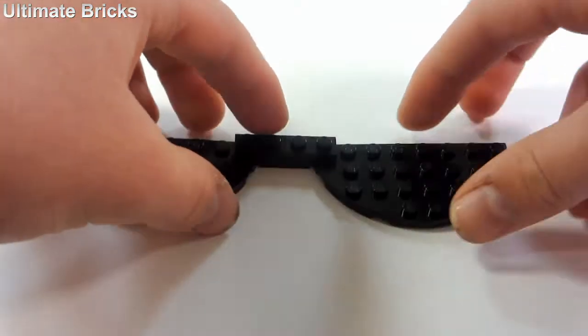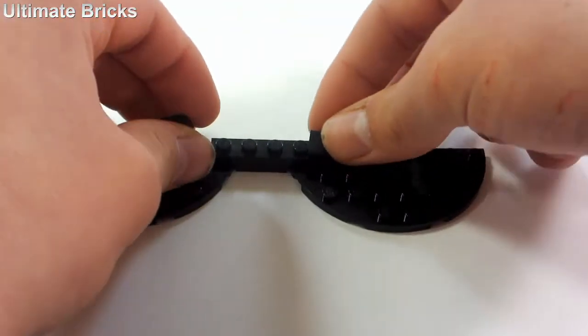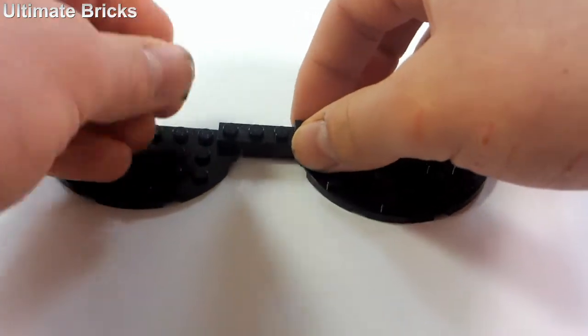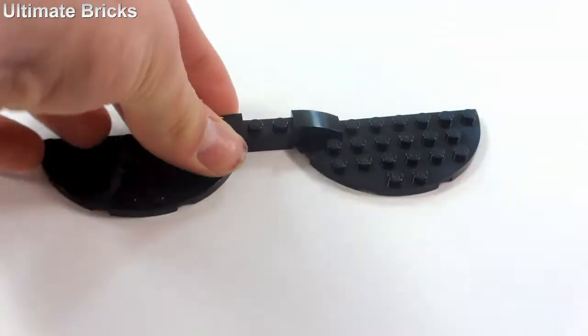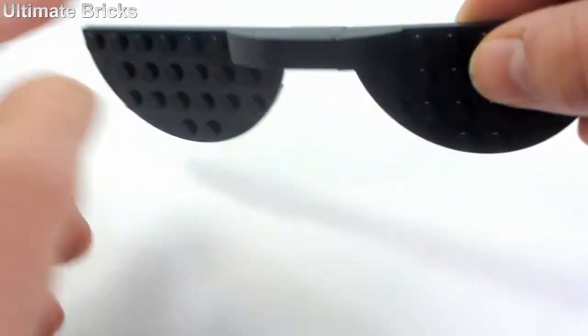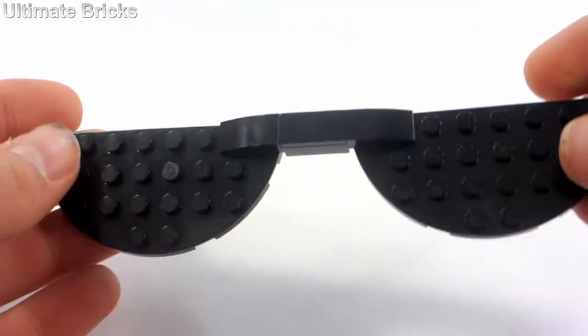However, it can move around. To fix that, you're going to take two of these slope pieces, put those on either side, and then put a tile in the middle. That really secures it as well as makes it look smoother.